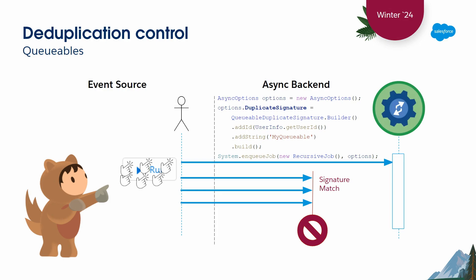Why is this beneficial? If those duplicate jobs were to run, they're likely to run into contention issues and locking around trying to update the same records and fields, or making callouts to the same external services. Additionally, async Apex jobs count against a daily limit for your org, so you're avoiding double-billing yourself for processing that's already going to happen.